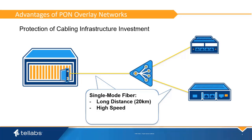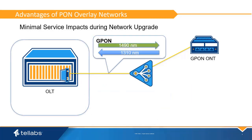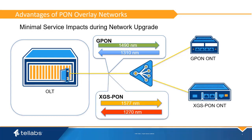This ensures that once the cabling is installed, it can be reused for subsequent upgrades to go to higher speeds and additional features with no changes to the cabling infrastructure. The ability to add additional wavelengths to the network with minimal interruption to the existing network is one of the key features that allow you to upgrade with minimal impact to your users.